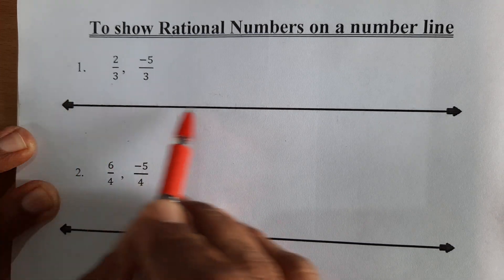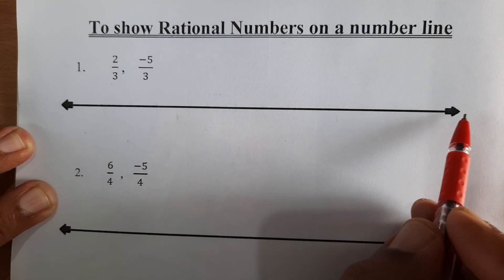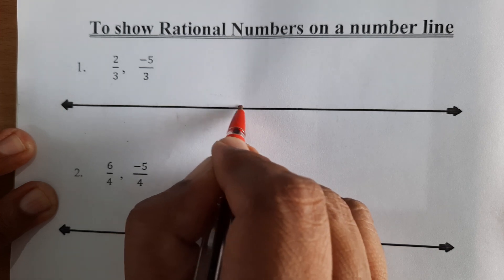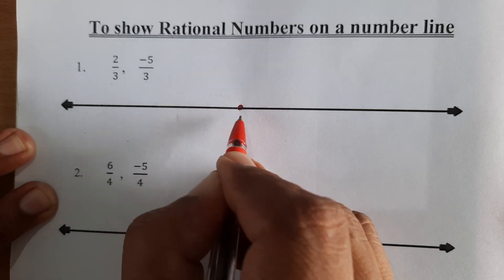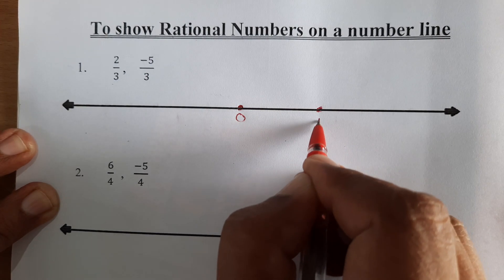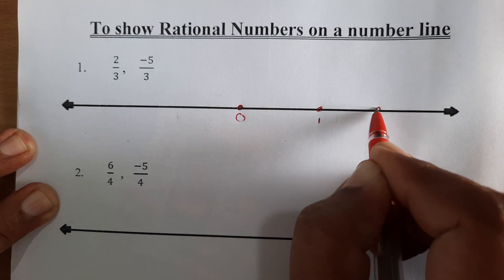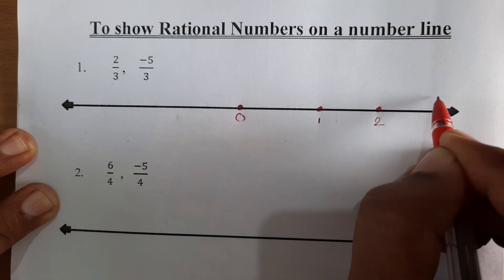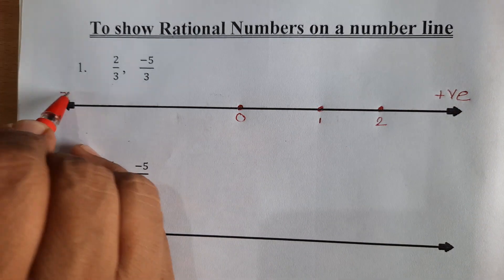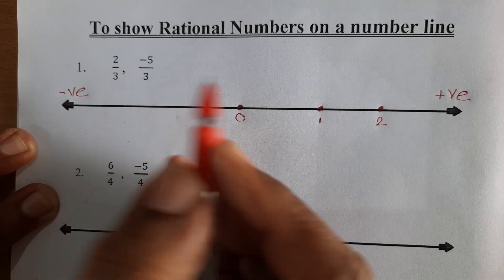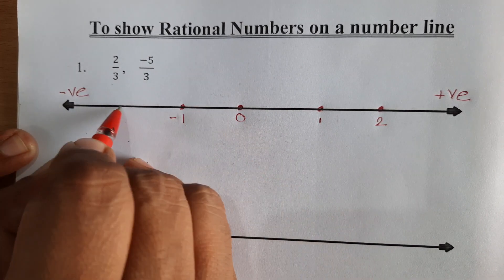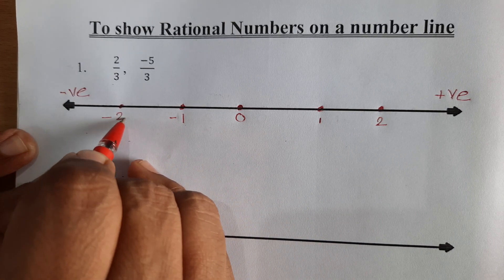First, draw a line then write integers on the line: 0, 1 and 2. Positive integers on the right hand side and negative integers on the left hand side: 0, negative 1, negative 2.